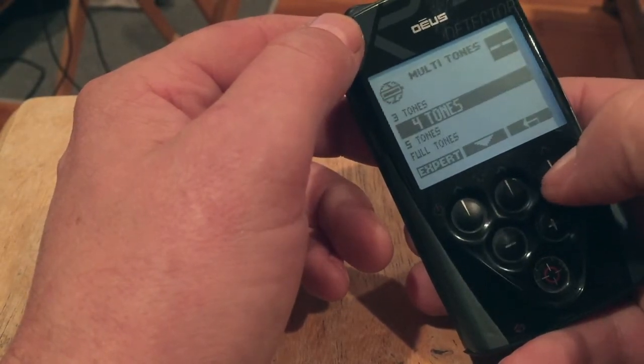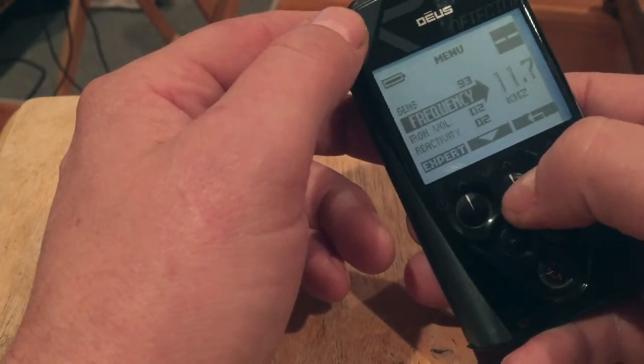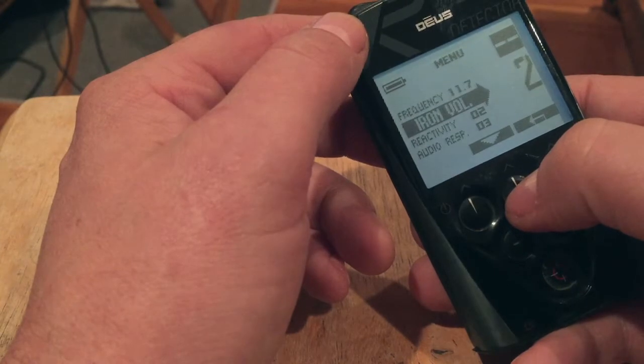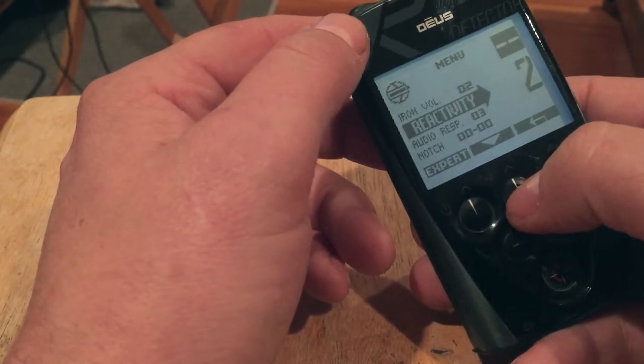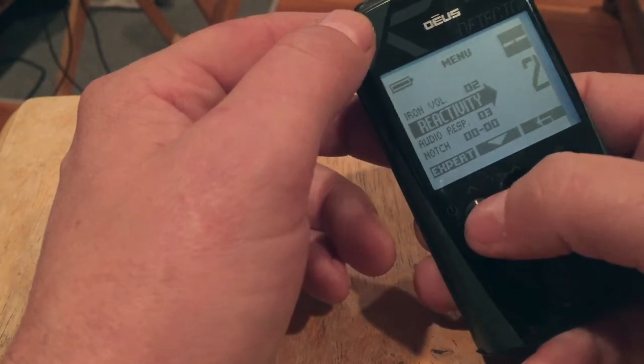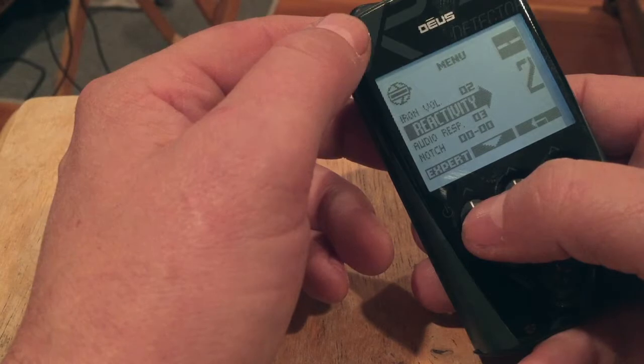The other thing I also do is I keep my iron volume to 2. That's personal preference. Reactivity is 2. I usually keep my silencer at zero or minus one.